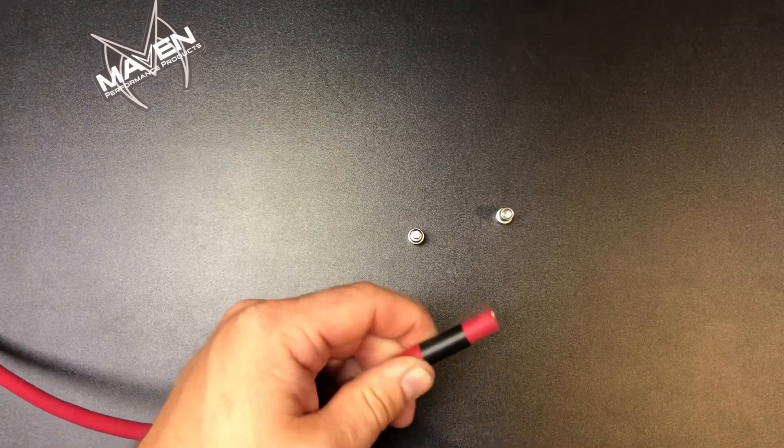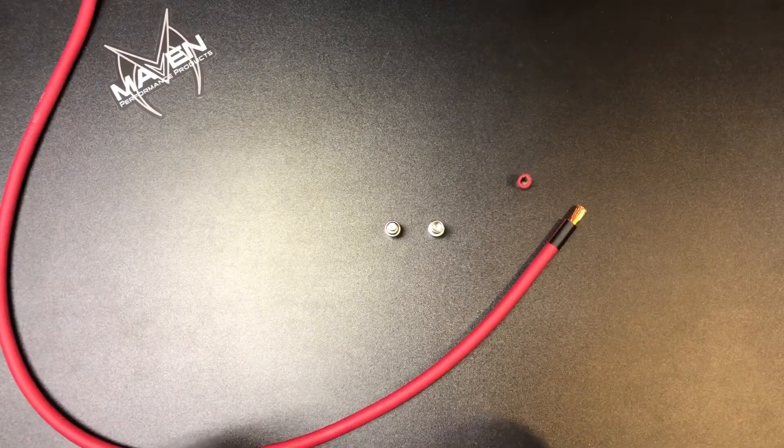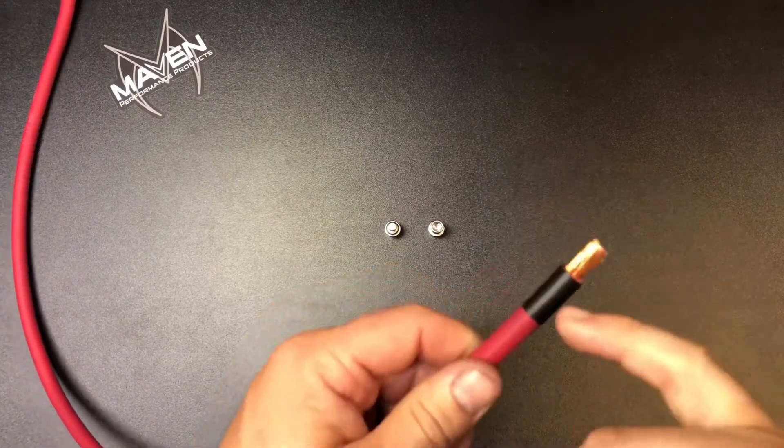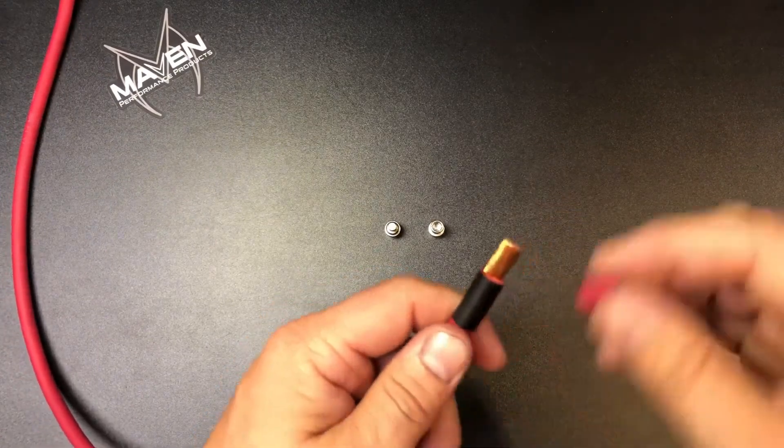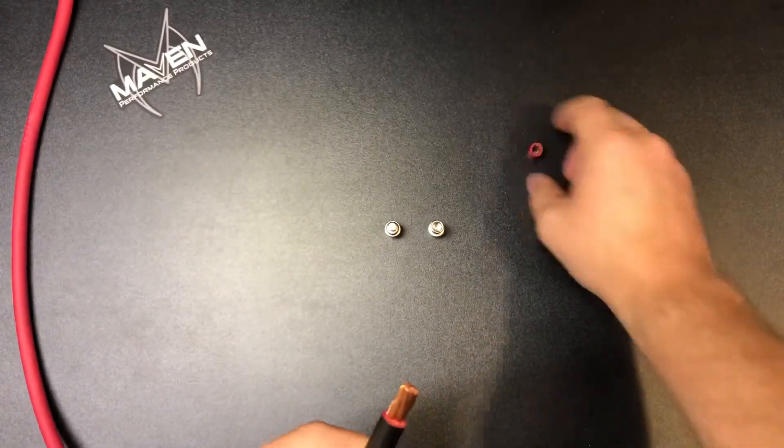If you use a utility knife or a razor blade to strip the insulation, you'll notice that you don't have to cut all the way down to the cabling to pull the piece of insulation off. That way you don't damage any of the conductors.